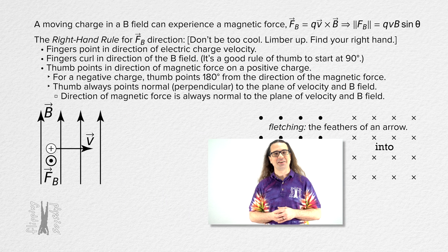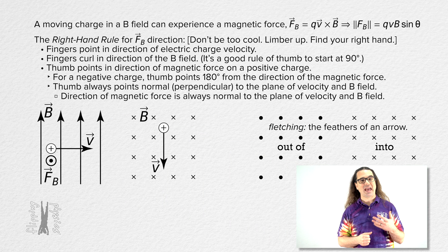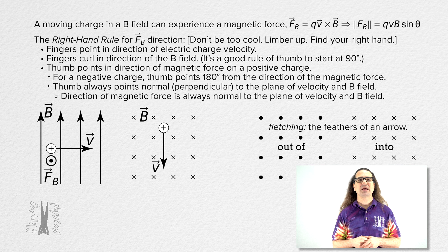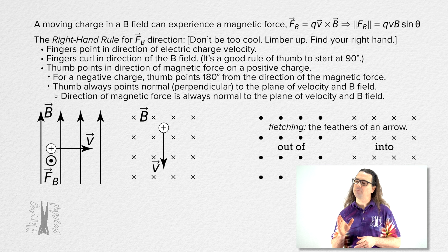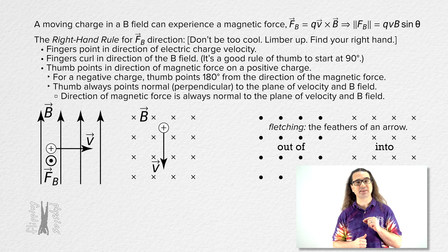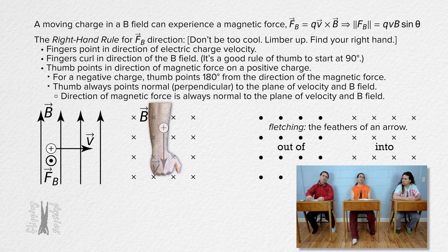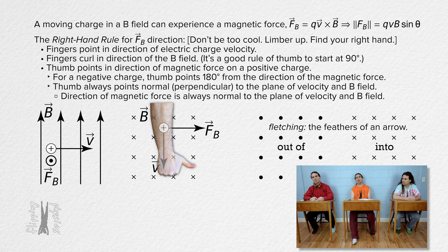Let's do another one. For this example, we have a uniform magnetic field which is oriented into the screen and a positive charge which has a velocity which is down. Bobby, please determine the direction of the magnetic force on this moving charge. Fingers of the right hand point down, curl fingers of right hand 90 degrees into the screen, thumb points to the right — so the magnetic force is to the right.